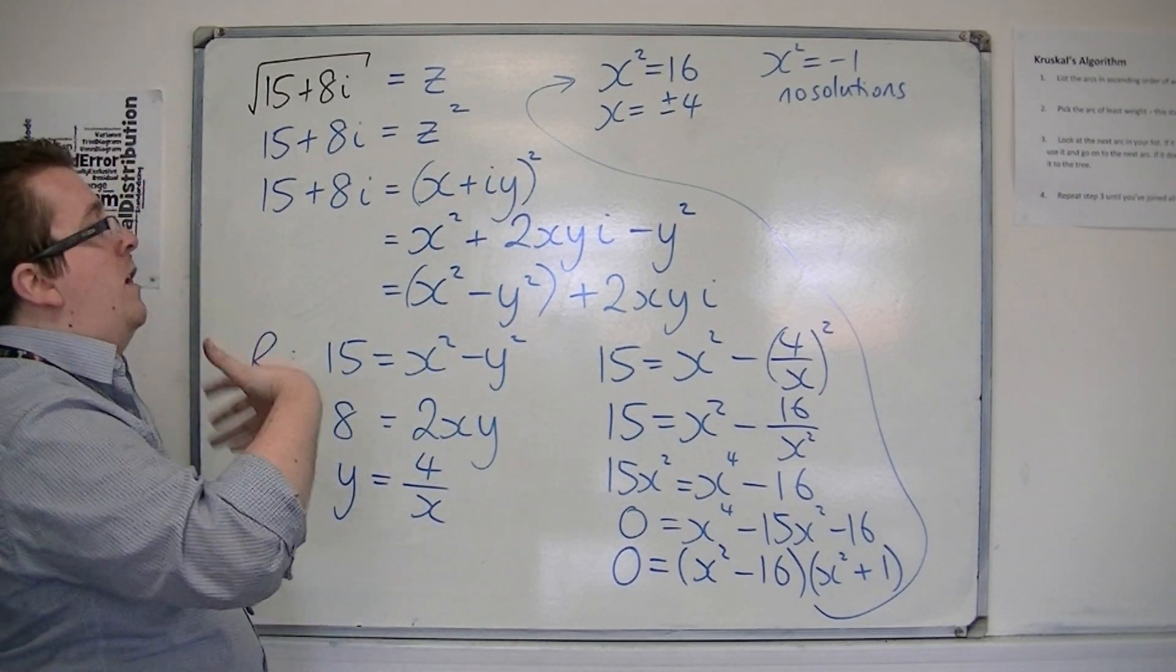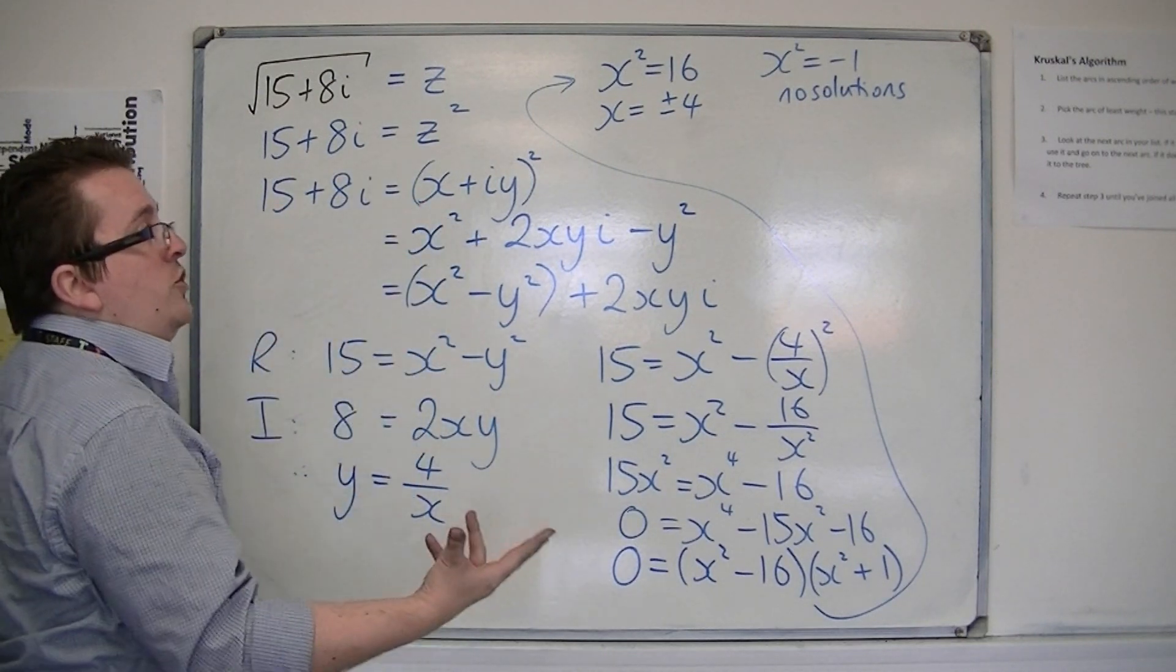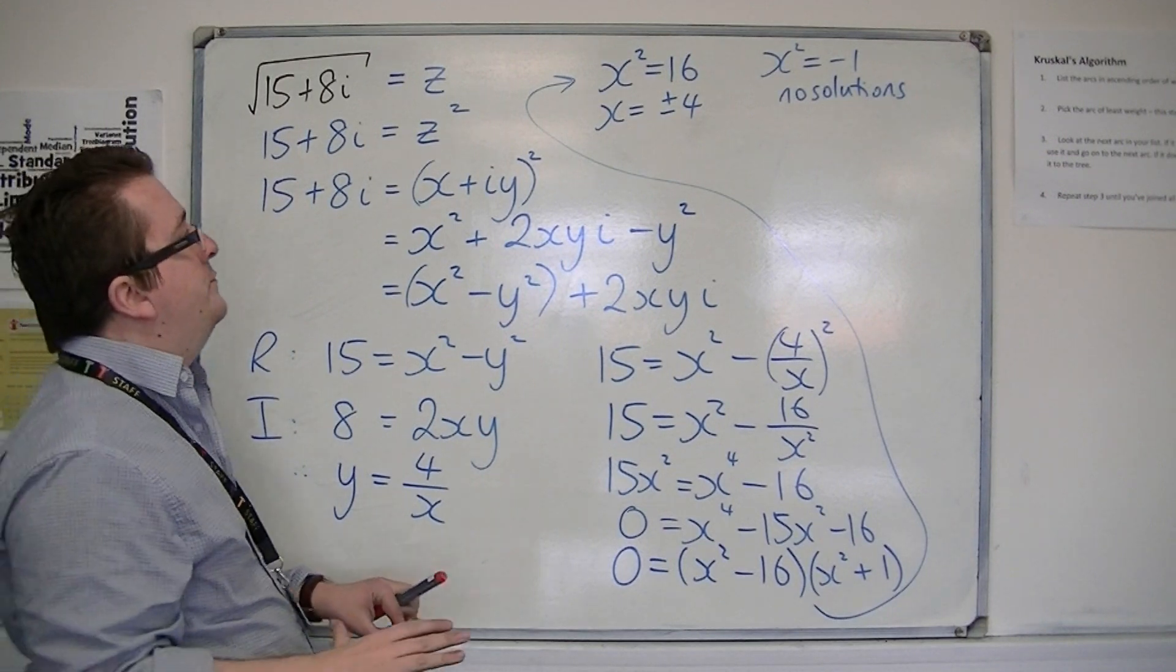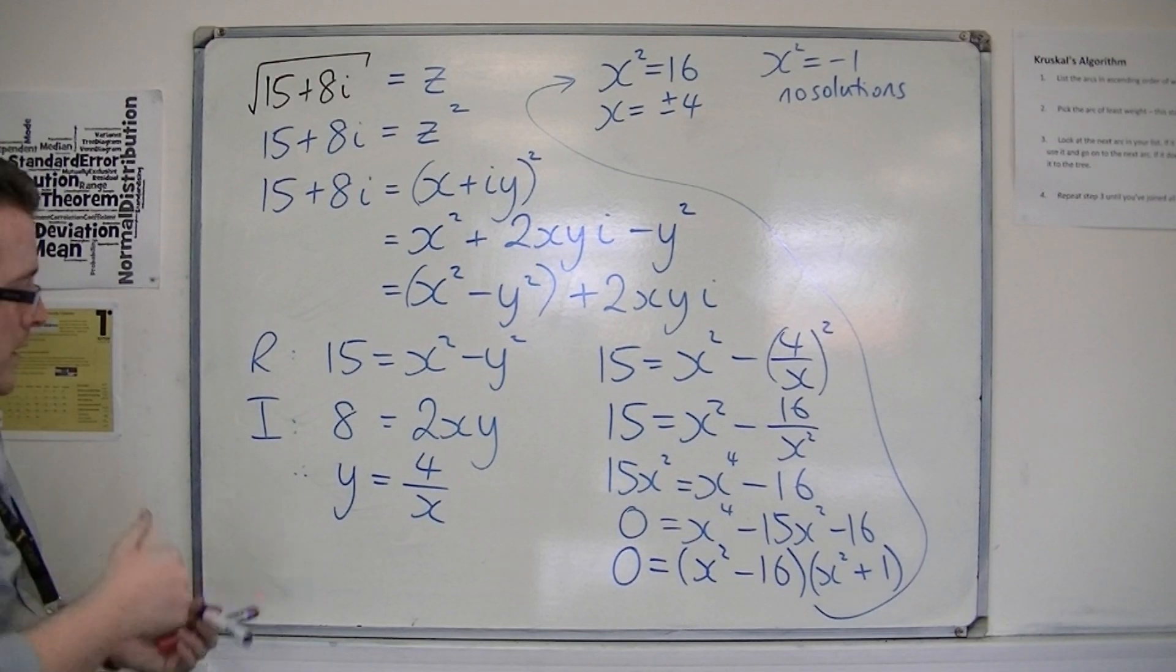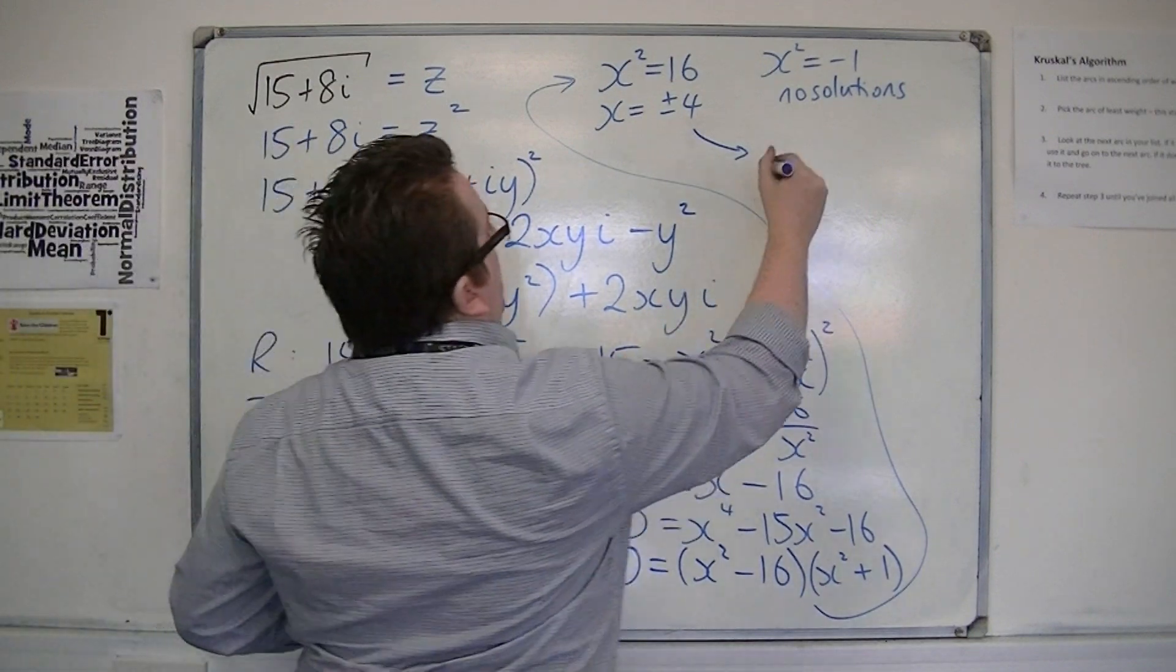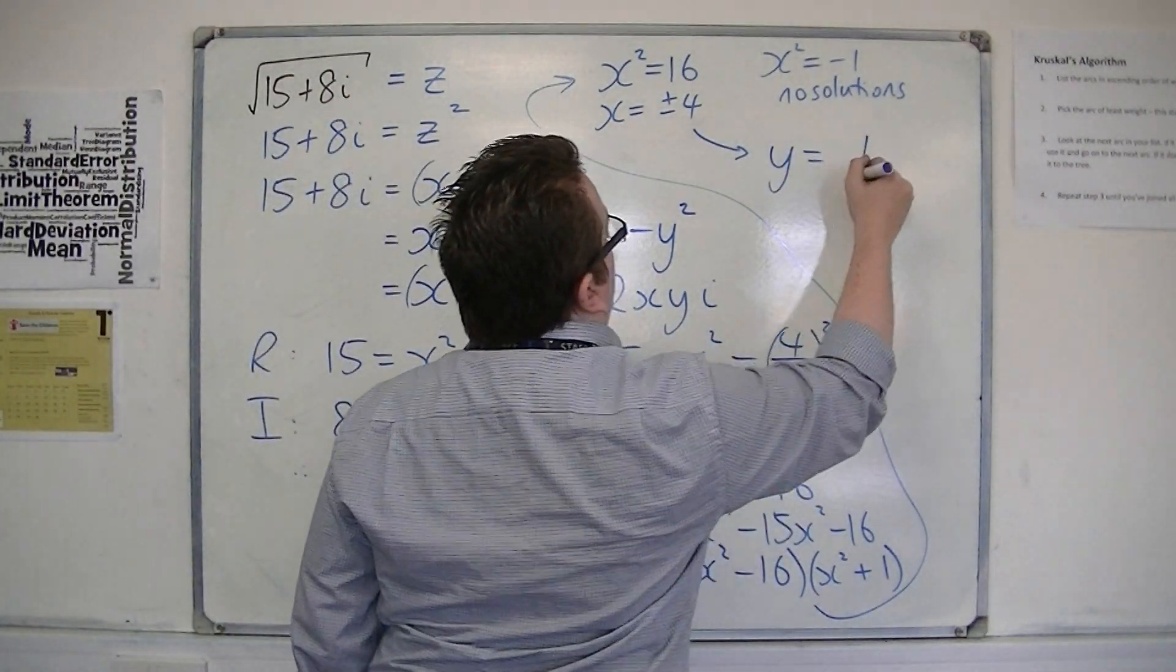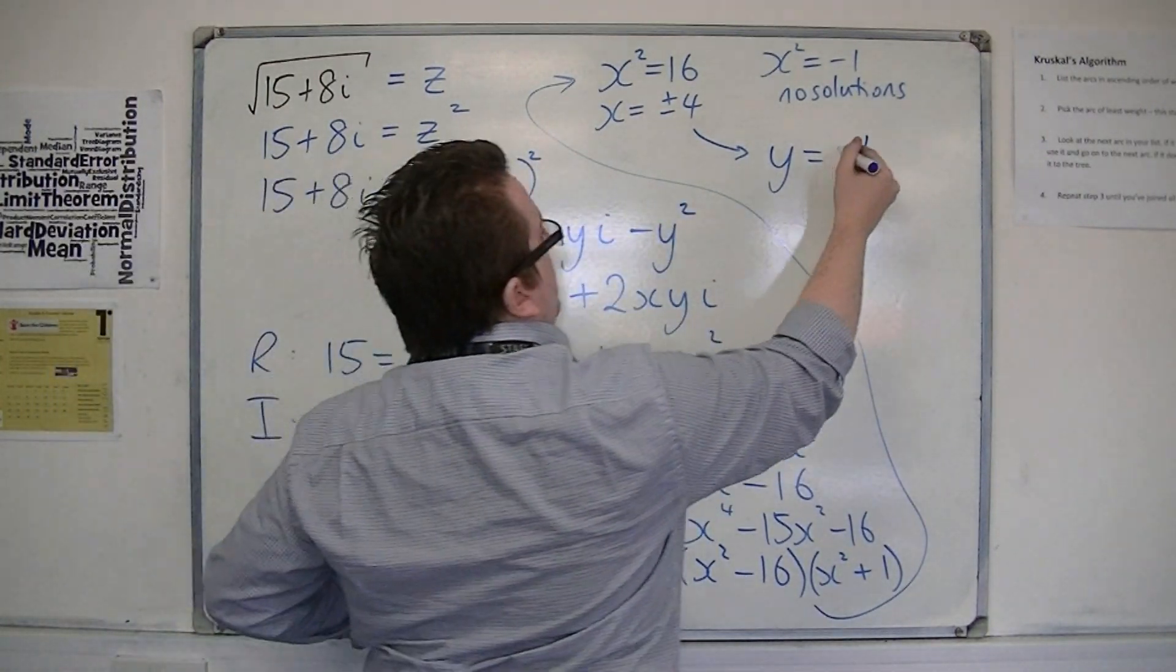They are both real, so we cannot have x being an imaginary number. So x squared equals minus 1 has no solutions whatsoever. So x is equal to plus or minus 4. That would mean that if x is positive 4, then y is 4 over 4, which is just 1. And when x is minus 4, y is minus 1.